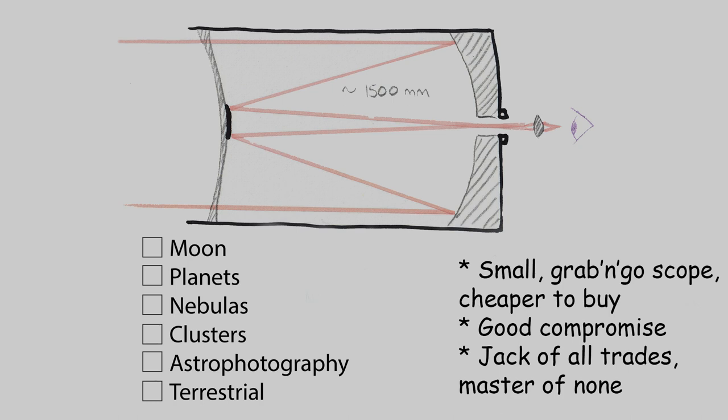Their focal lengths tend to be around 1500 mm, which makes them a reasonable compromise scope. Their small physical size makes them good for grab and go scopes.